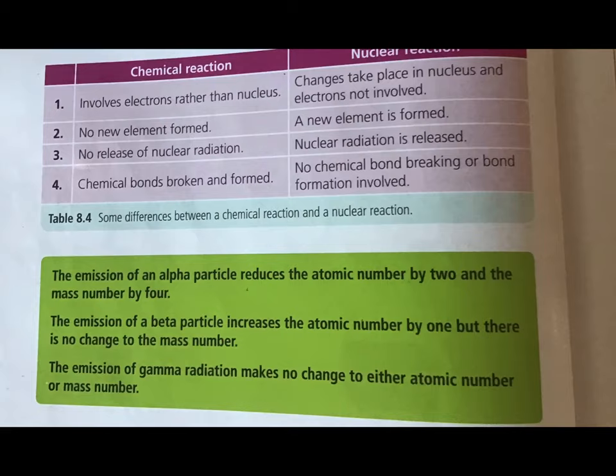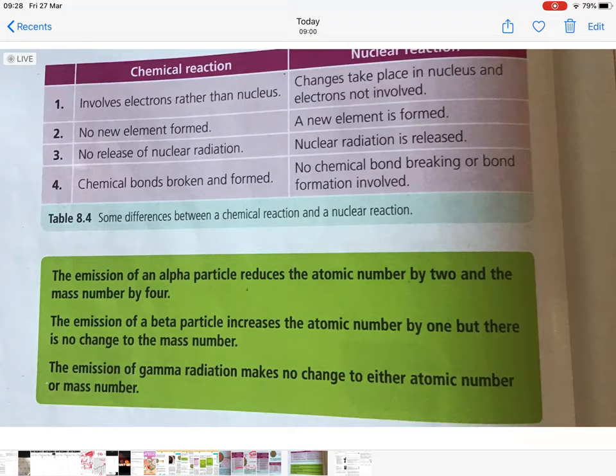Finally, I want to run through the differences now between chemical and nuclear reactions. Chemical reactions involve transfer of electrons or sharing of electrons. No new element is formed, you're just producing a compound. No release of nuclear radiation and you're breaking bonds or forming bonds, chemical bonds, because it's involving electrons. With nuclear reactions, the changes are taking place in the nucleus. No electron involvement. You do form a new element because you're changing the atomic number. If you change the atomic number, you will change the identity of the element. Radiation is released from the nucleus. No bond breaking or bond formation.